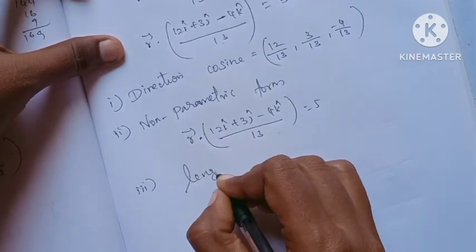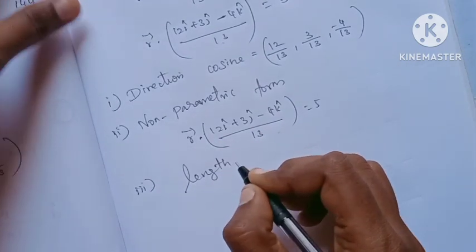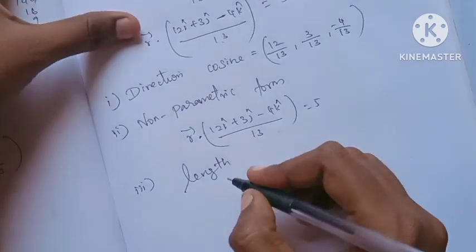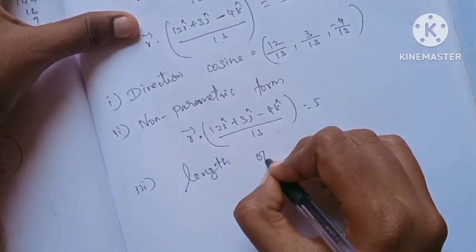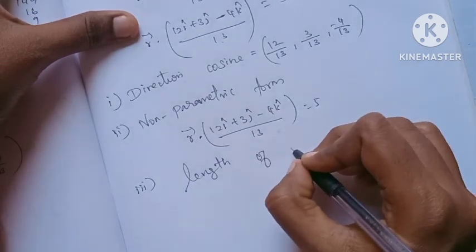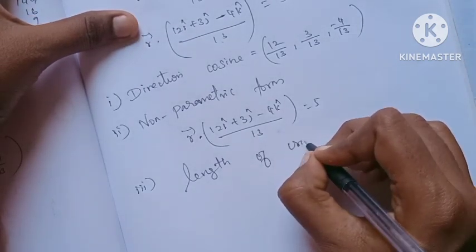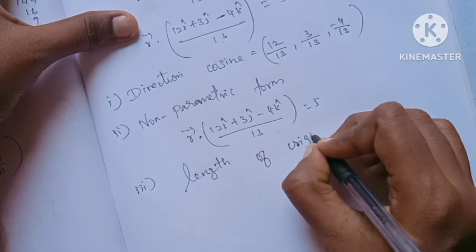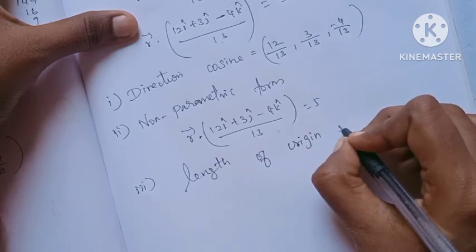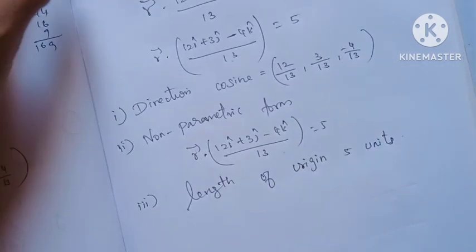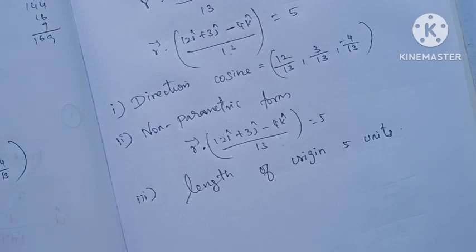The length of the perpendicular from the origin is 5 units. Thank you.